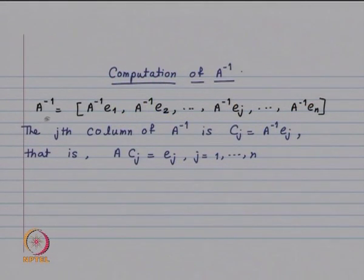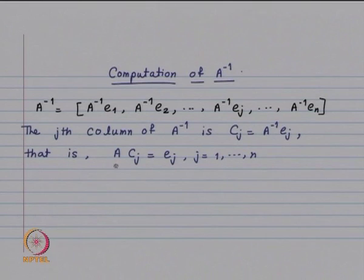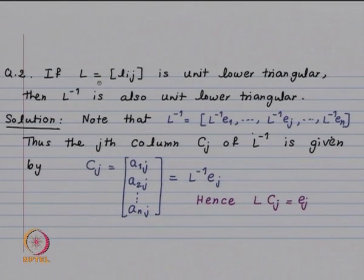We use this result to show that the inverse of a lower triangular matrix is lower triangular. The computation of A inverse is: A inverse = [A^{-1}E1, A^{-1}E2, ..., A^{-1}En]. The j-th column C_j of A inverse equals A^{-1}E_j, equivalently A*C_j = E_j for j = 1 to n. So the j-th column of A inverse is obtained by solving the system A*C_j = E_j, where E_j is the canonical vector with 1 at the j-th place and 0 elsewhere.